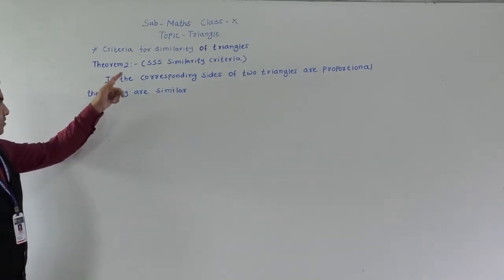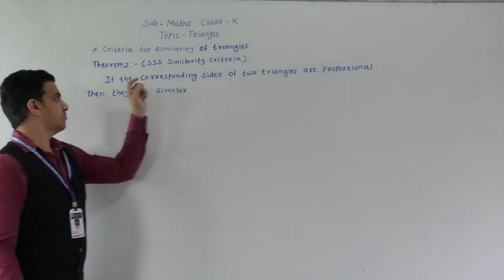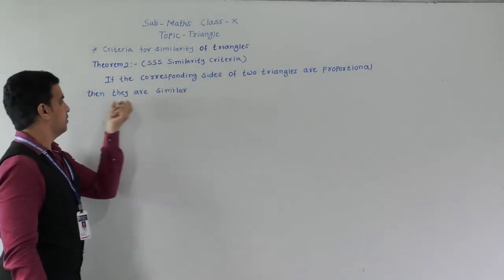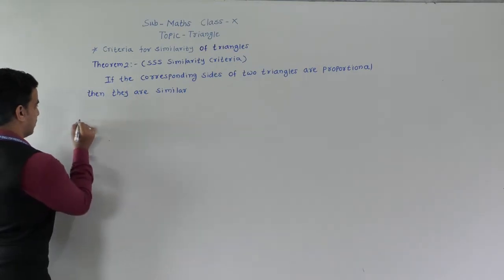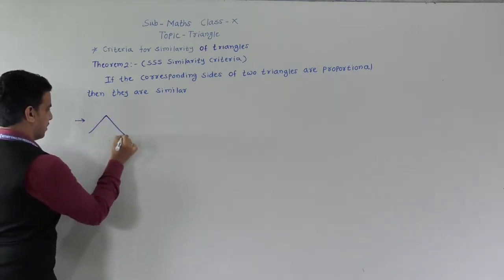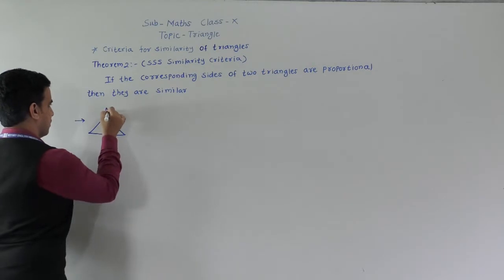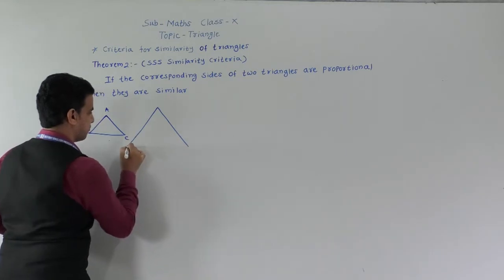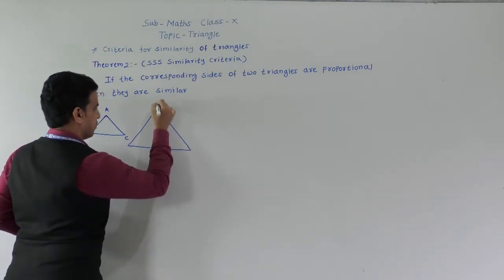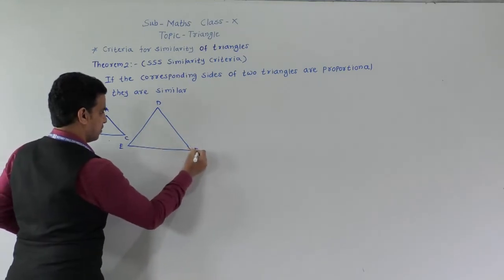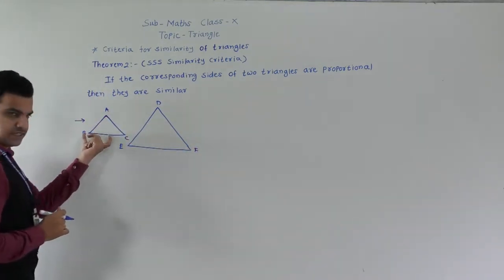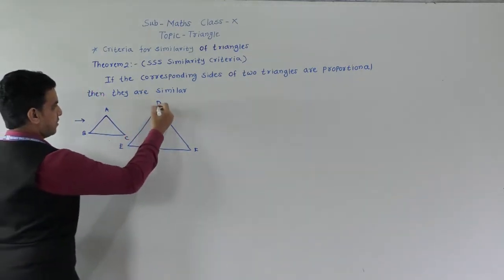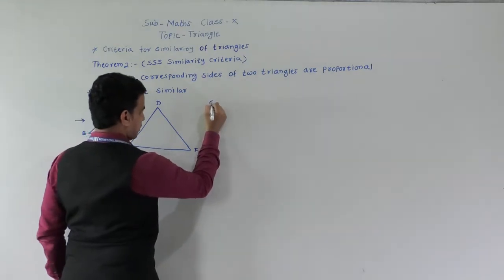The second criteria is SSS Similarity criteria. If the corresponding sides of two triangles are proportional then they are similar. So if we take these two triangles, triangle ABC and triangle DEF, sides are proportional given means AB by DE is equal to BC by EF is equal to AC by DF. We have to show that these two triangles are similar, so first we have to write the given conditions.